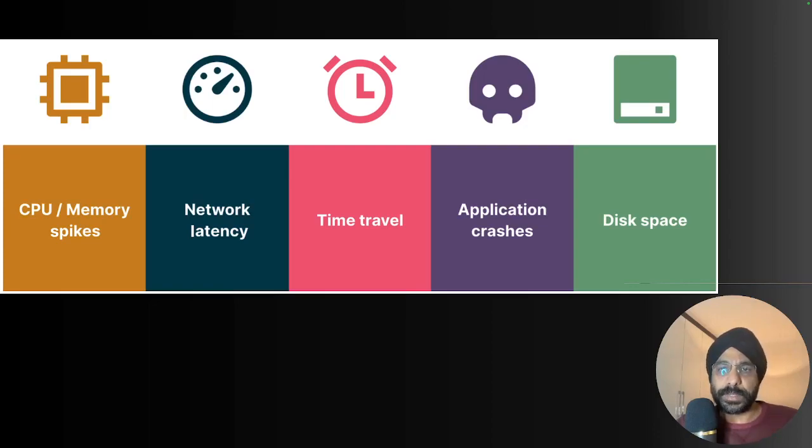The most common problems that every application suffers are like CPU or memory spikes, network latency, time change during daylight saving time, reduced disk space filling too quickly, and application crashes. So the first step would be to make the infrastructure resilient to overcome these kinds of disasters, and then your application has to be resilient.